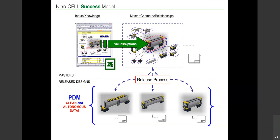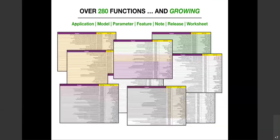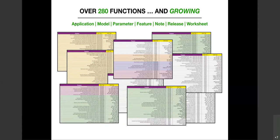Excel files and master models should always be kept separate and under their own control within PDM. NitroCell has a lot of functionality — some functions look like one line doing one thing, but that one line can do a lot. First article inspection reports are a good example of that, which I'll show you shortly. Let's go into the NitroCell demonstration.